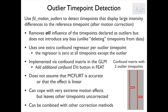Another problem is if we have a lot of outliers to model, either because the threshold is too low or simply because the subject moved a lot. Also in this case, we will have a lot of additional regressors, potentially reducing statistical power.